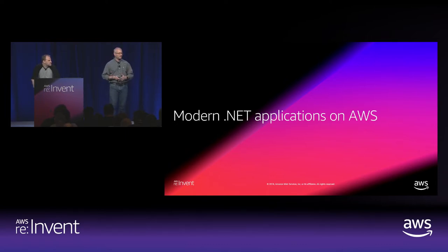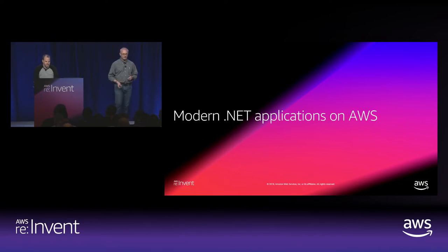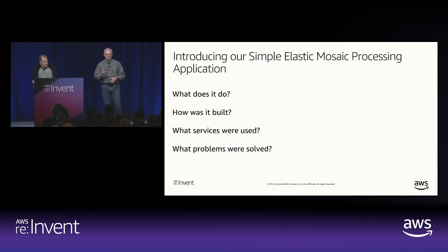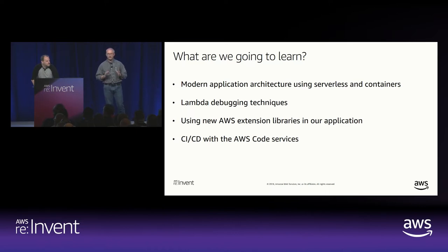In previous demos at re:Invent, we demonstrated tooling from Visual Studio or the .NET CLI for deployments. We're doing that again today, but Norm has also written a full CI/CD pipeline behind the scenes using the AWS code services. We'll also introduce Norm's simple elastic mosaic processing application. We'll look at what it does, how it was built, the services Norm chose, and what problems he solved — covering modern serverless and container architecture, new Lambda debugging techniques, new AWS extension libraries for the .NET SDK, and CI/CD with AWS code services.